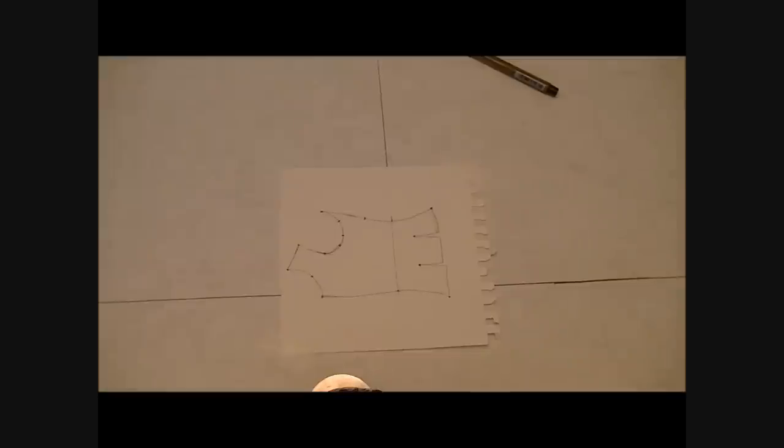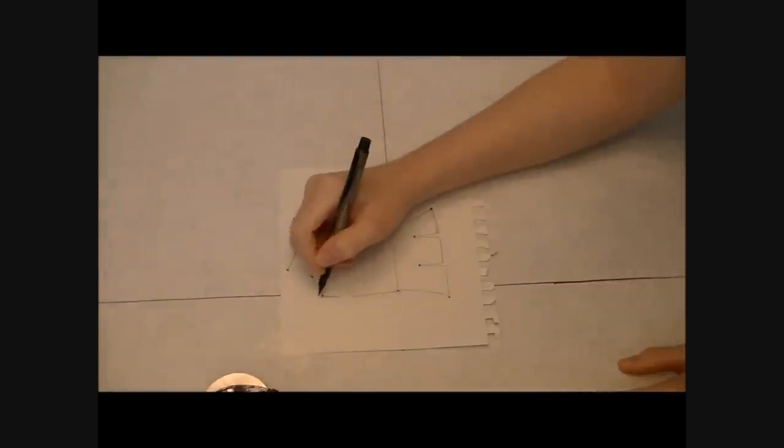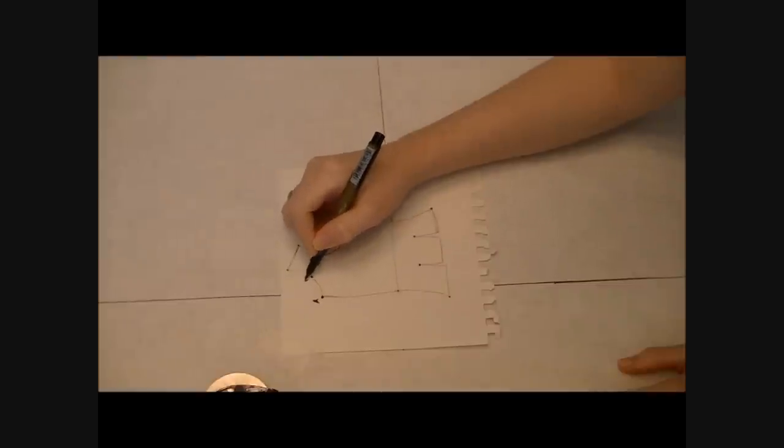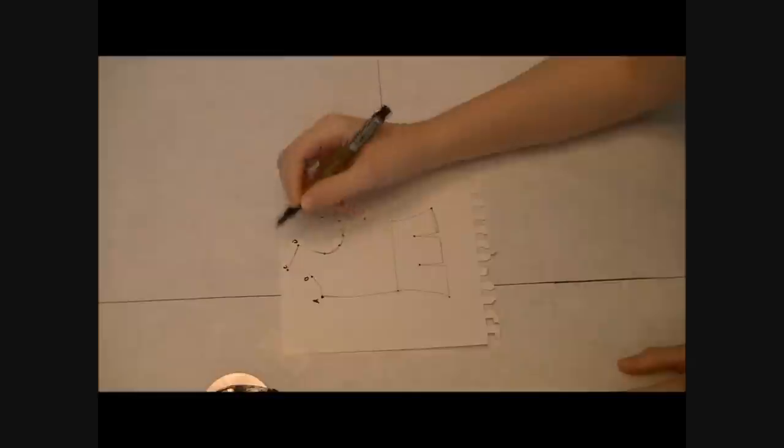Next we're going to square up a line on our pattern paper, just horizontal and vertical line that meet. Make sure you leave enough space at the bottom of the paper for the lower edge of the jacket. Where those two lines meet is going to be our starting point. Now we take our pattern and line up the horizontal line with our waistline and tape it down.